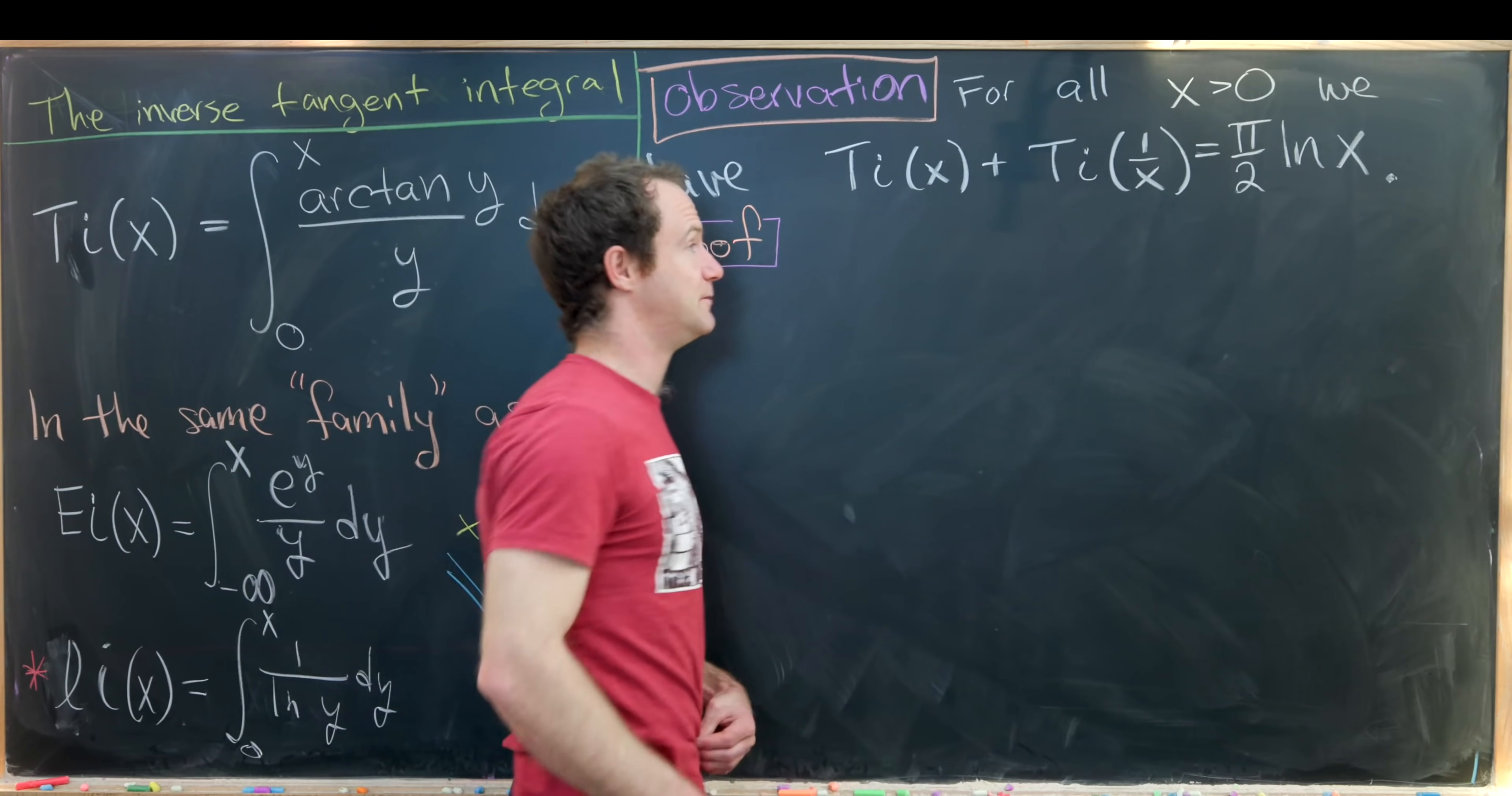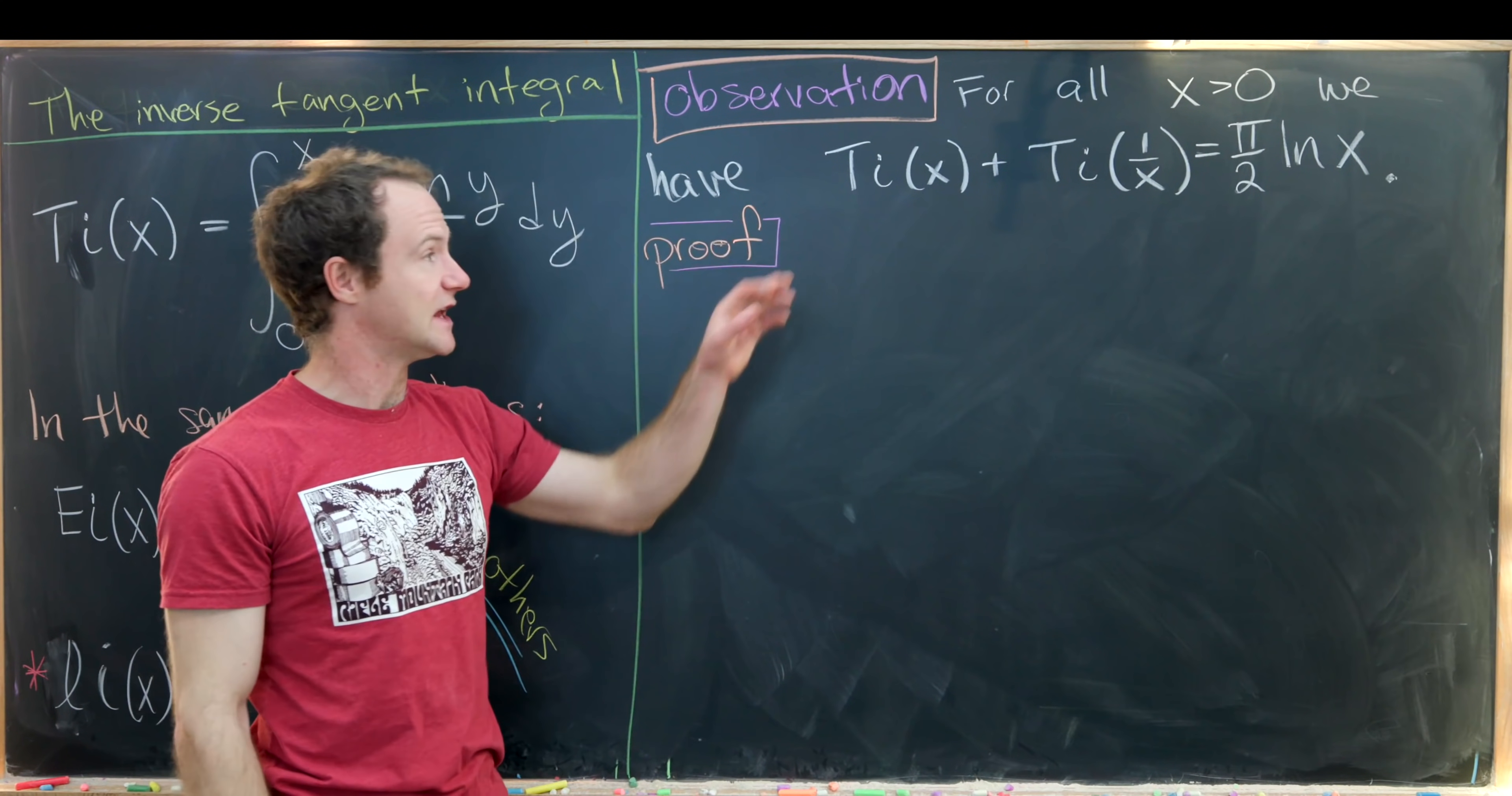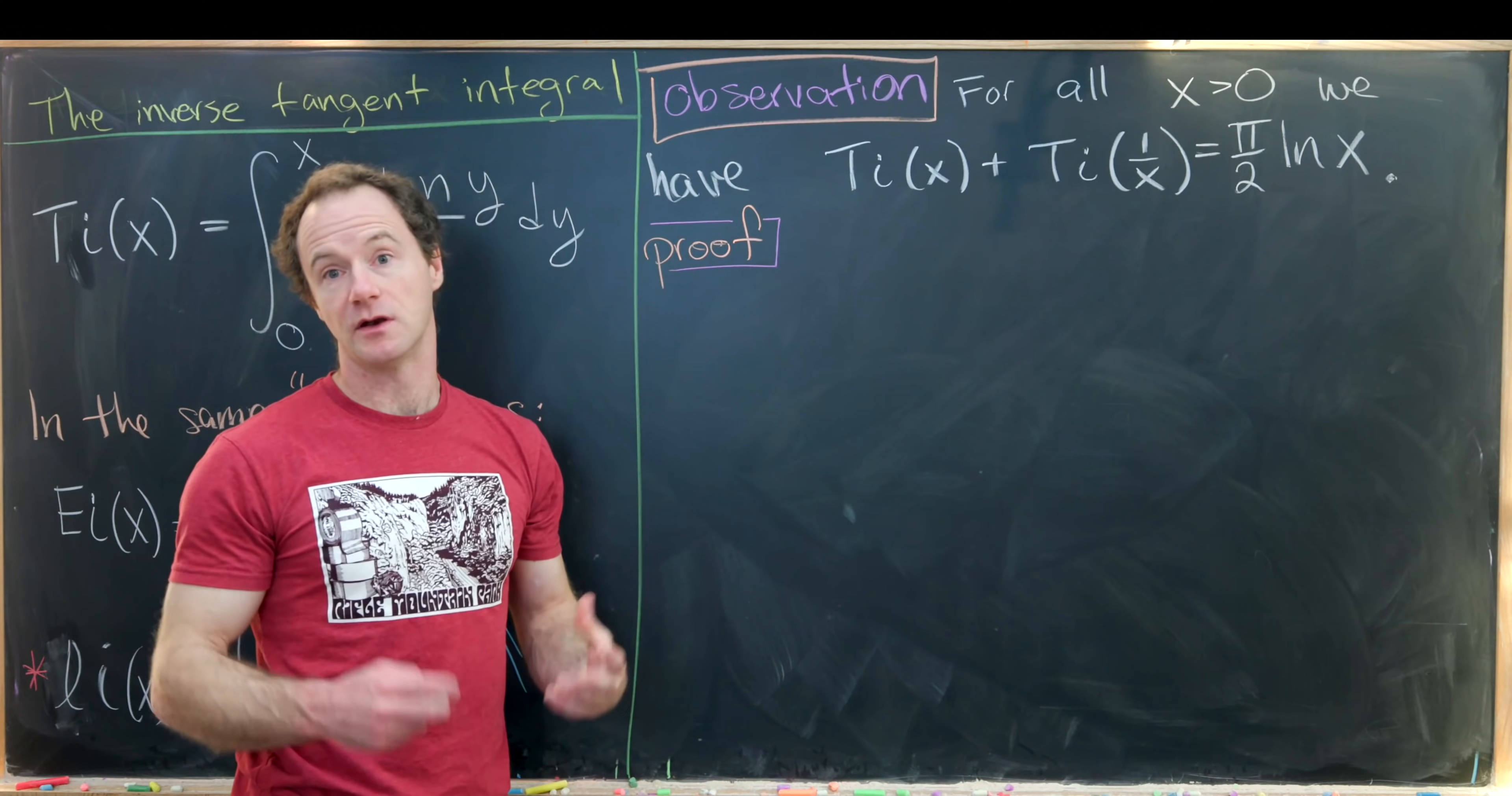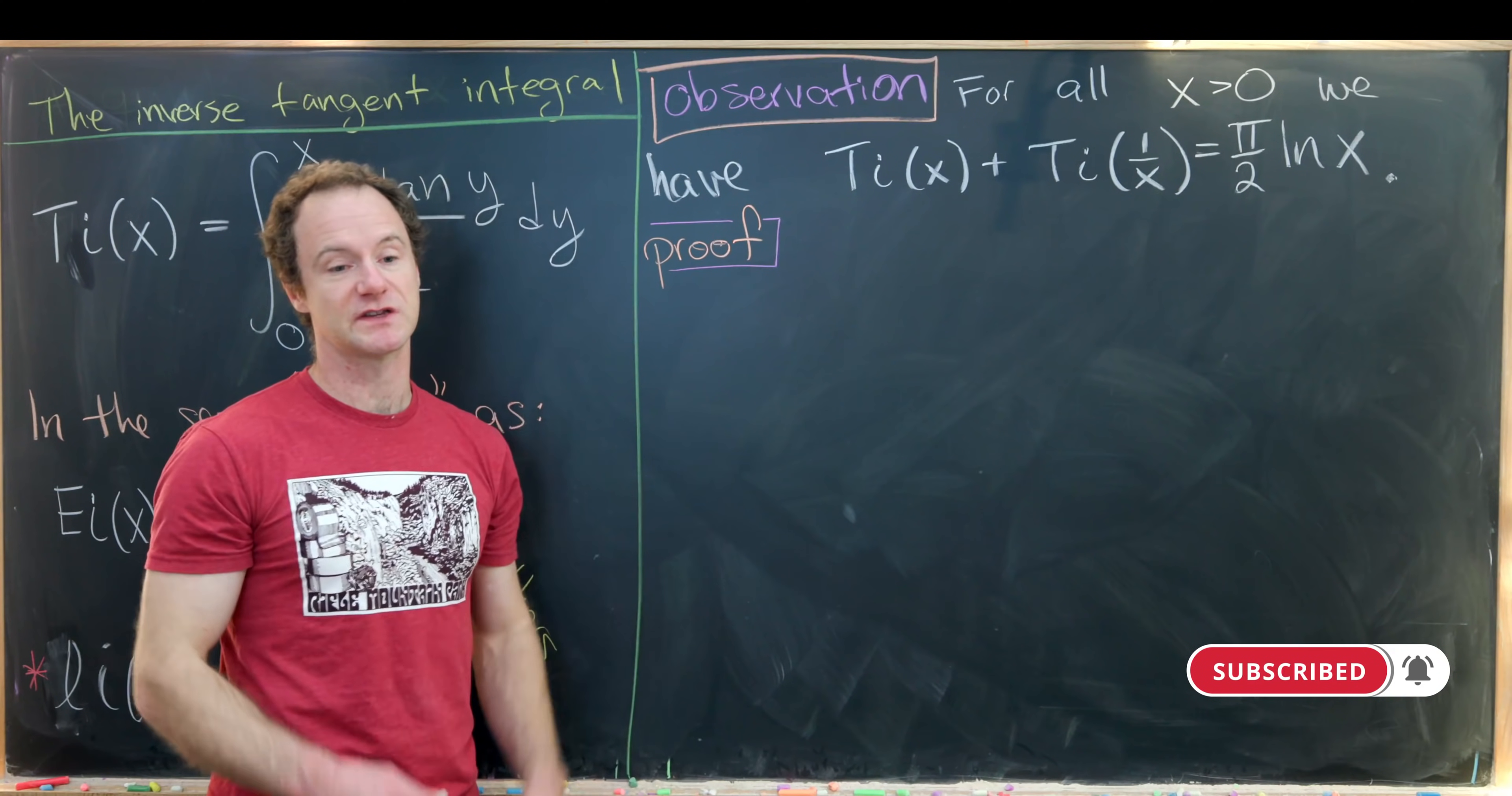is that for all x bigger than 0, we have the following identity: Ti of x plus Ti of 1 over x equals pi over 2 times the natural log of x. And you can extend this to all non-zero real numbers without too much difficulty. I'll let you guys think about what it would look like for x less than 0. Maybe post in the comments.